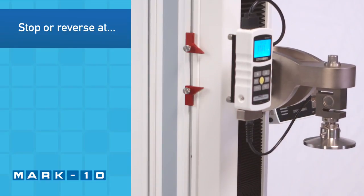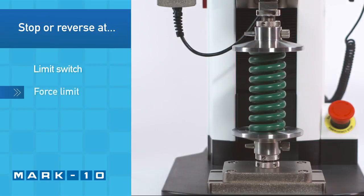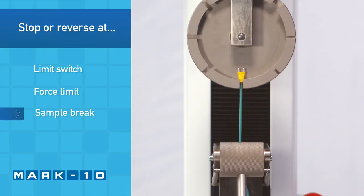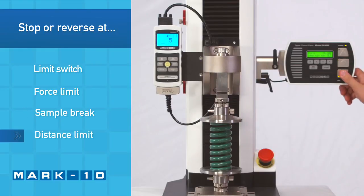The test stand can be configured to automatically reverse or cycle between limit switches, when reaching a force, when the sample has broken, or when a distance limit has been reached.